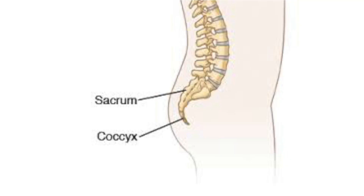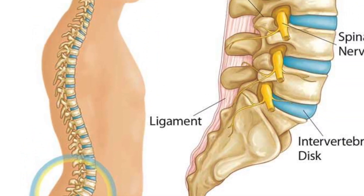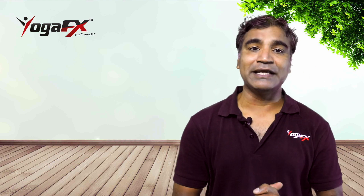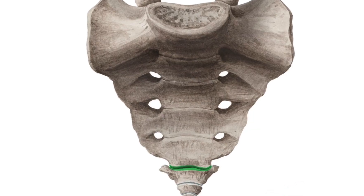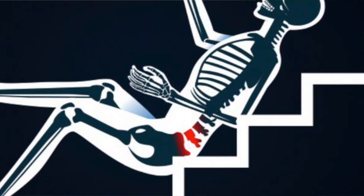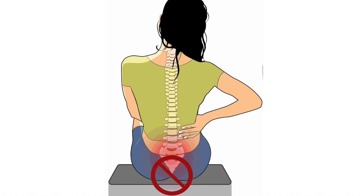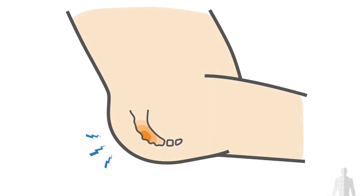The coccyx, or tailbone, is located at the base of the spine and is composed of four fused vertebrae. Ligaments attach the coccyx to the sacral hiatus at the synovial sacrococcygeal joint. When sitting, the coccyx shifts forward and acts as a shock absorber. However, falling on the tailbone or events such as childbirth can lead to coccygeal pain known as coccydynia, often caused by an unstable coccyx resulting in chronic inflammation of the sacrococcygeal joint.